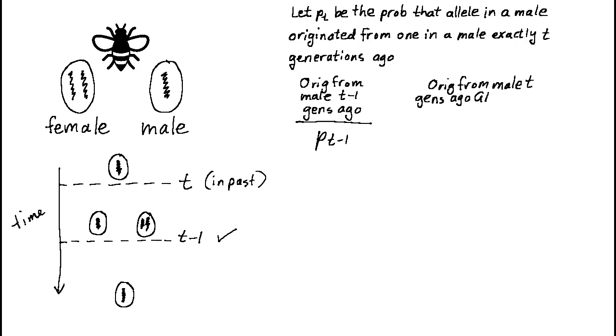Now, given that the allele was found in a male t minus 1 generations ago, we know that it must have come from a female in the previous generation because males only inherit genes directly from females. So in this case, the probability that the allele in question originated from a male t generations ago must be zero.